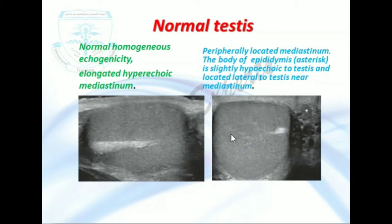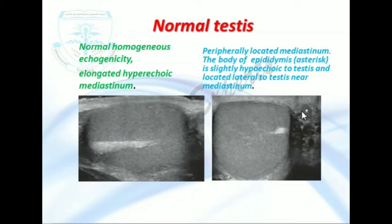This is the normal testis. This is the mediastinum, with hyperechoic echogenicity and a smooth surface. This is also the mediastinum, peripherally located. Here we can see the epididymal body, and if we compare the two, the echogenicity of the epididymal body is lesser as compared with the testes.